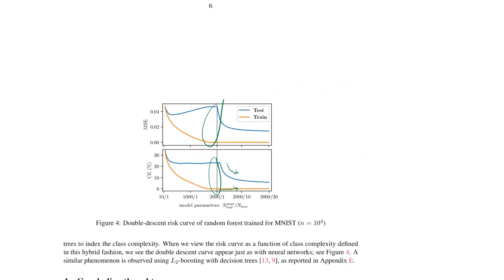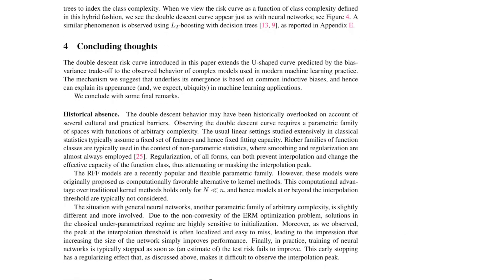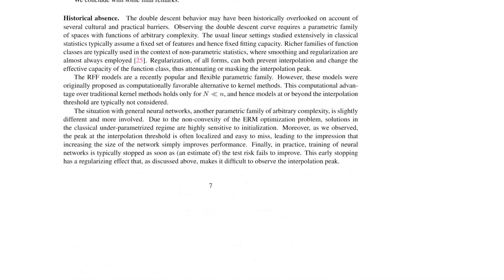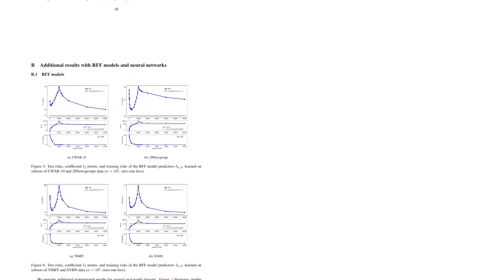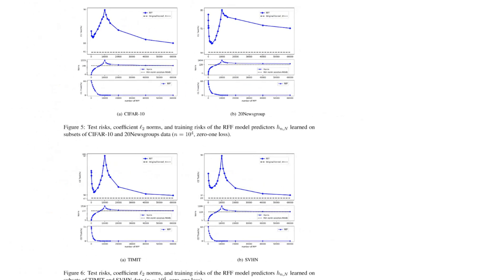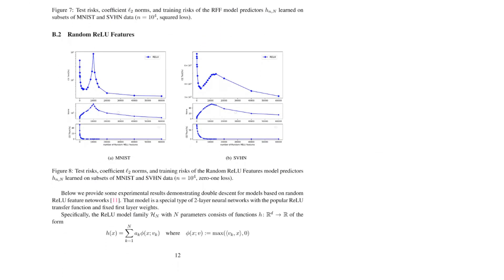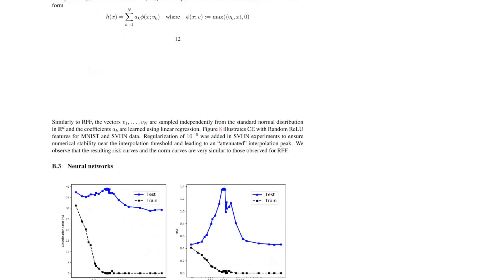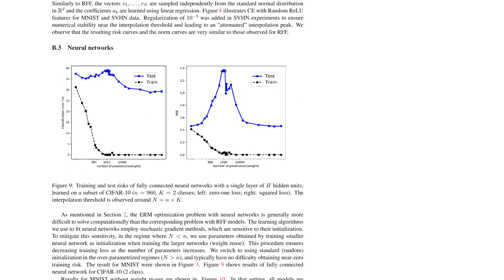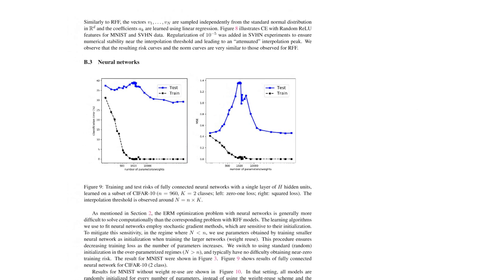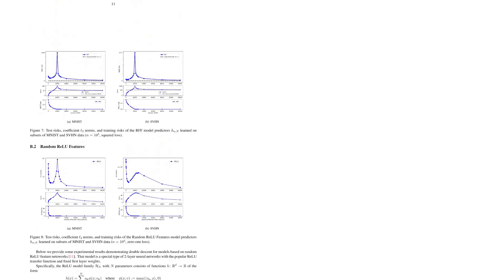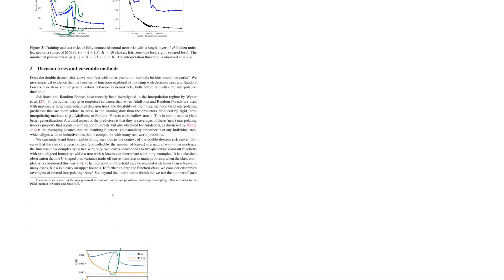And they do the same thing with decision trees and random forests and show the exact same thing that there's this interpolation threshold after which the test error drops, even though the training error is almost zero. So to me, this is really remarkable. And they show this in the appendix, they have many, many more experiments where they show this phenomenon happening on different data sets and on different architectures, here, random ReLU features and so on. And it kind of gives a new perspective on generalization and why our models generalize so well.